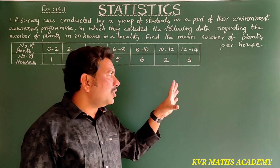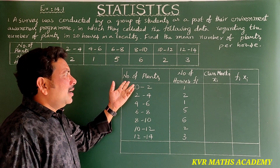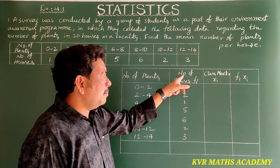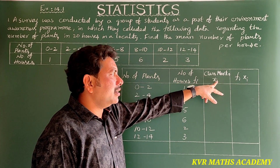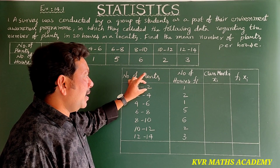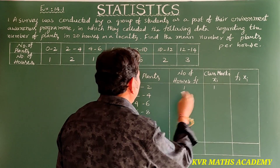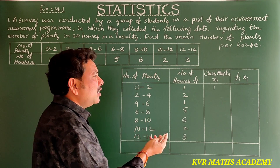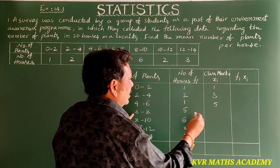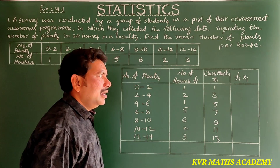First, we draw the table with columns: class intervals (number of plants), number of houses (fi), and class marks (xi). The class mark xi equals upper class limit plus lower class limit divided by 2. So: (0+2)/2 = 1, (2+4)/2 = 3, (4+6)/2 = 5, then 7, 9, 11, and 13.